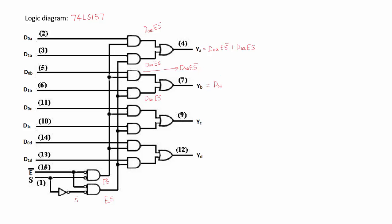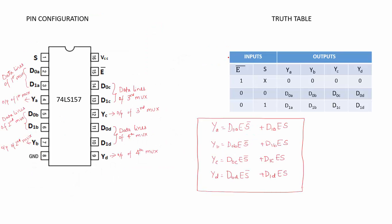So YB will be D0B·E·S-bar + D1B·E·S. The NAND gate outputs for multiplexer C give E·S-bar and E·S, so YC will be D0C·E·S-bar + D1C·E·S. The NAND gate outputs for multiplexer D give E·S-bar and E·S, so YD will be D0D·E·S-bar + D1D·E·S. You can see that YA, YB, YC and YD match what we derived from the truth table.